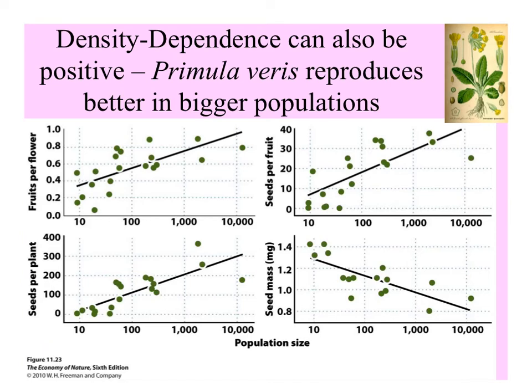Density dependence isn't only negative. Certain organisms do better when populations are bigger — maybe more mates are available, or more pollinators are attracted for plants. With the Primula varis dataset, the number of fruits produced per flower increases, along with the number of seeds and seed set for individual fruits. Interestingly, seed mass declines, but there is a trade-off between number and size in seeds.